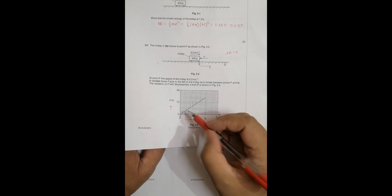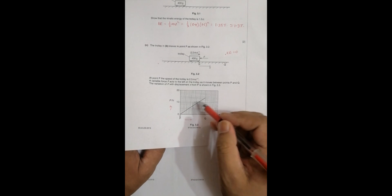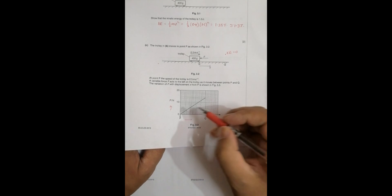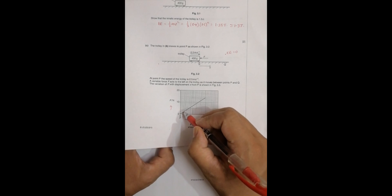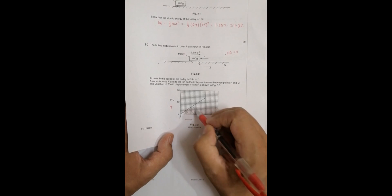Also we know that the work done is given by the area covered by force and displacement graph. Work done is equal to area of this thing, which will be equal to the area of this graph.